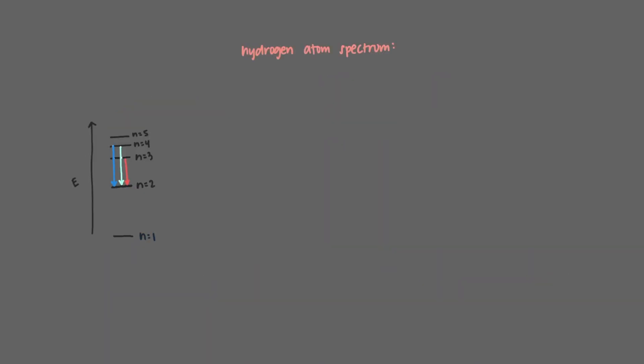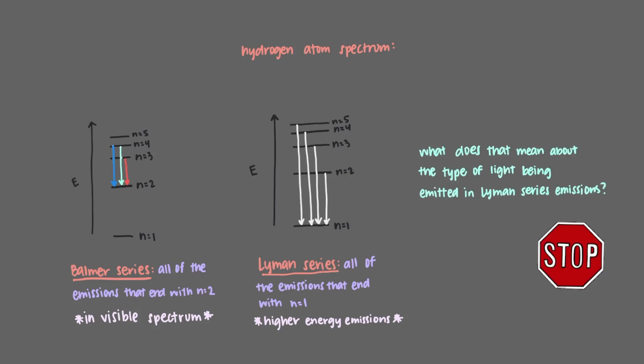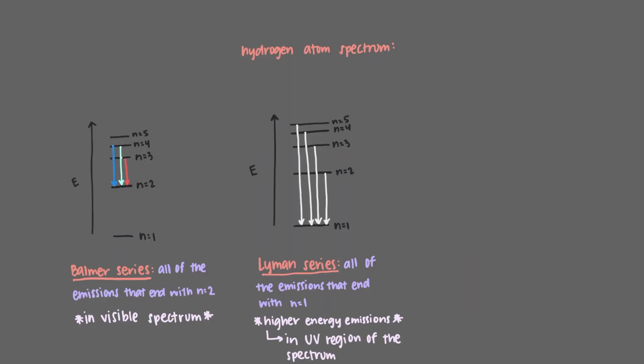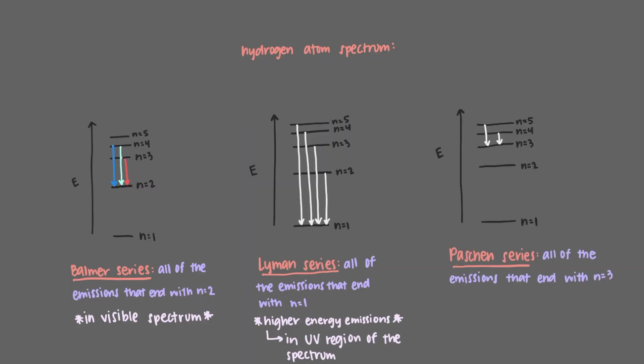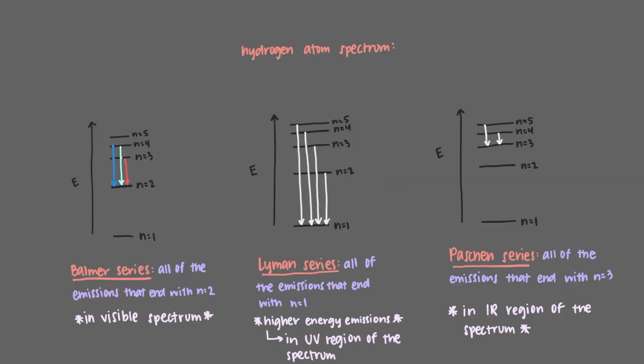In the hydrogen atom spectrum, all emissions that end with an n equals 2 electron are part of the Balmer series, and these emissions are in the visible region of the spectrum. The Lyman series emissions all end with n equals 1, and they are all higher energy emissions in the UV region of the spectrum. Finally, the Paschen series emissions all end with an electron at n equals 3 — and all of the Paschen emissions are infrared light.